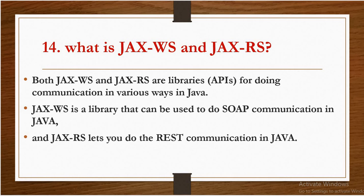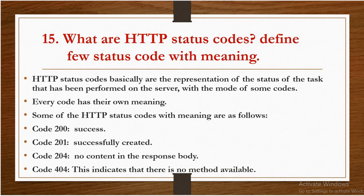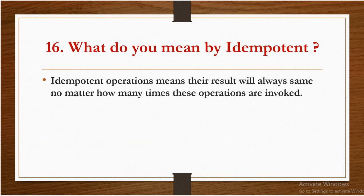Next: what are HTTP status codes? Define a few status codes with their meaning. HTTP status codes are the representation of the status of a task that has been performed on the server, conveyed through some codes. Every code has its own meaning. Some HTTP status codes: 200 means Success; 201 means Successfully Created; 204 means No Content in the response body; 404 means the requested resource or method is not available.